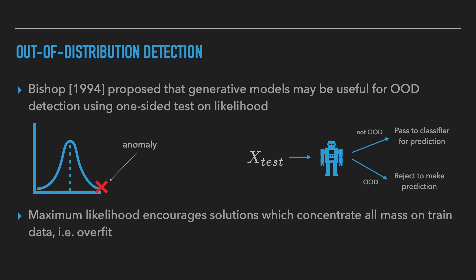While generative modeling is an exciting topic in itself, we are interested in the application of DGMs to uncertainty. One of the first ideas to use generative models for anomaly detection was presented in the work of Bishop. He described a simple approach: first, we choose some threshold for the likelihood epsilon. The generative model is then used to detect whether the input data point is in-distribution or out-of-distribution, depending on whether its likelihood falls below or above the threshold — a one-sided test on likelihood. If data is detected as in-distribution, it is passed to the classifier; otherwise the model says 'I don't know.'